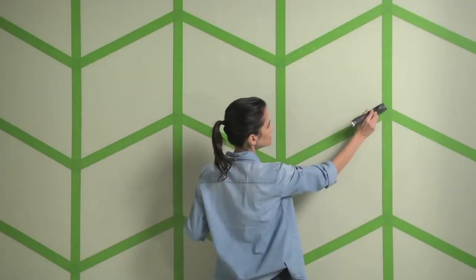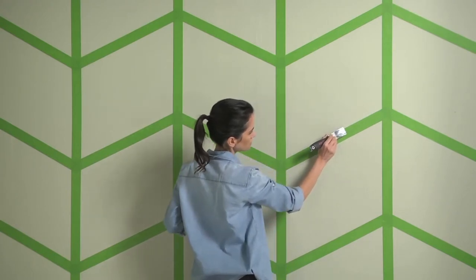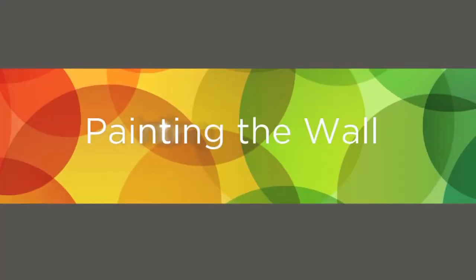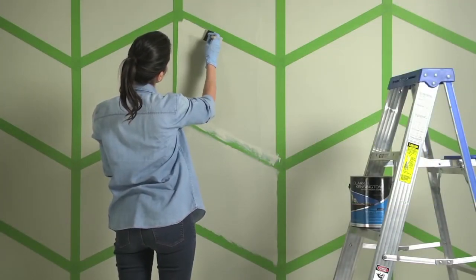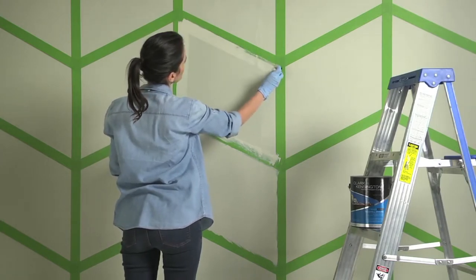Smooth over the edge of each tape strip with a putty knife to seal the edges. With a small foam brush, seal off the edges of the tape with a bit of your base wall color. This will ensure crisp, clean lines with no bleed through of the top coat color.